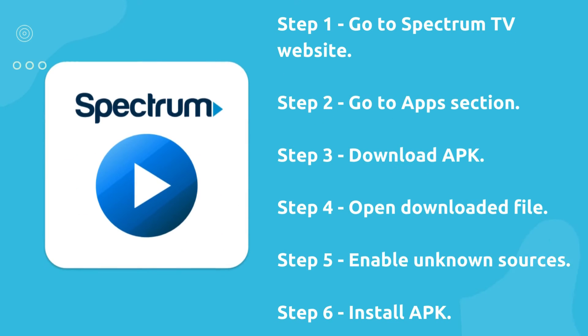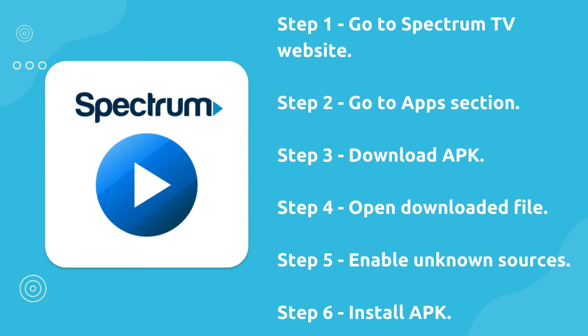Step 1: Go to the Spectrum TV website. Step 2: Go to the app section. Step 3: Download the app. Step 4: Open the downloaded file. Step 5: Enable unknown sources. Step 6: Install the APK.